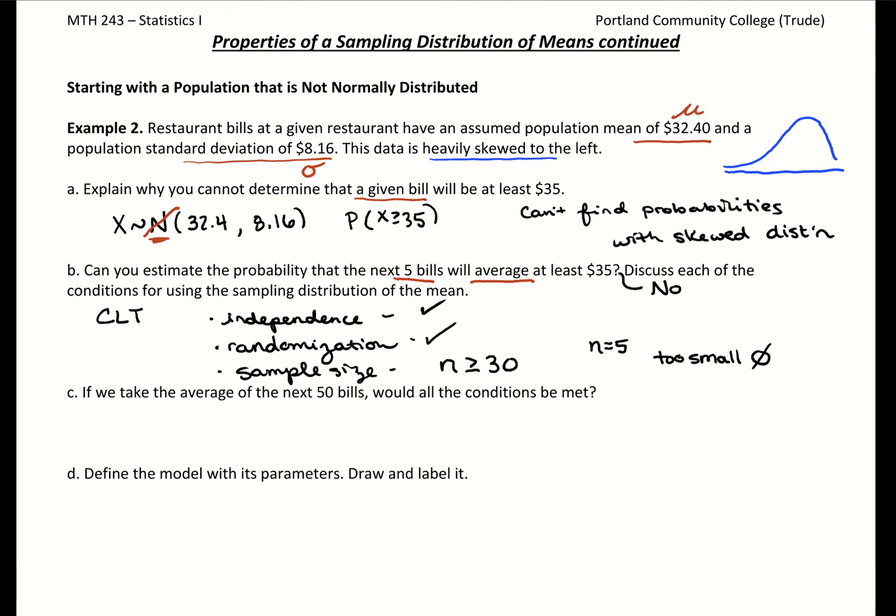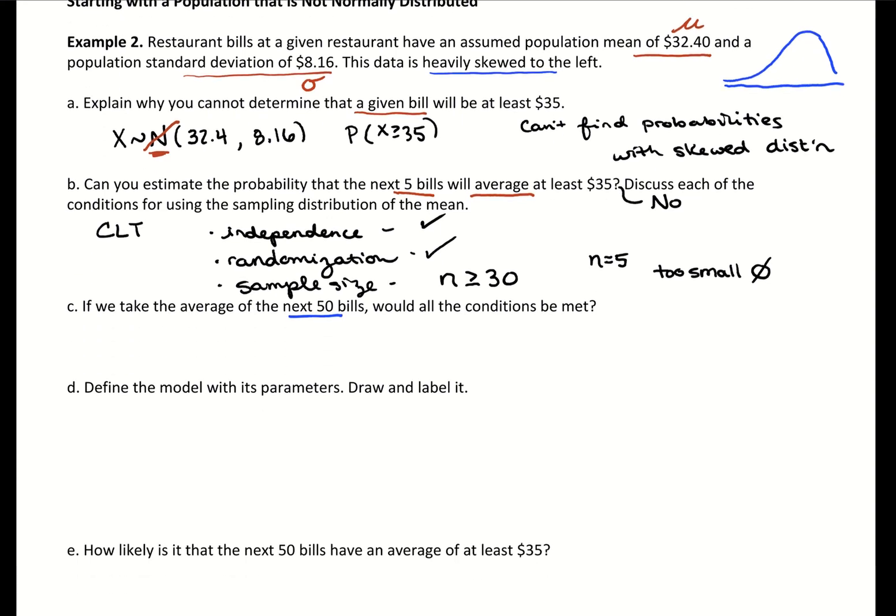If we take the average of the next 50 bills, so if we up our sample size, we'll assume we still have independence and it's random enough. And now with a sample size of 50, we're at greater than or equal to 30, so we're good. So if we take that average, would all the conditions be met? Yes, because now we have a large enough sample size. Using the sample size of 50, we're going to build our model and find some probabilities.